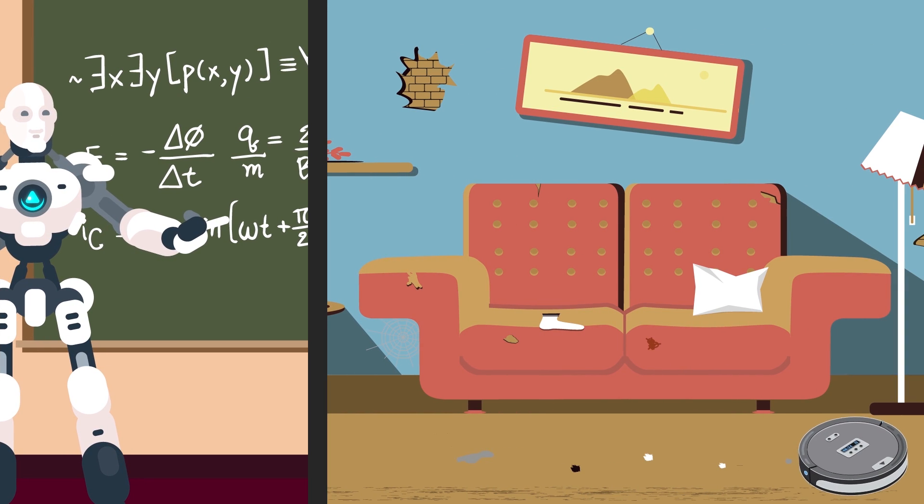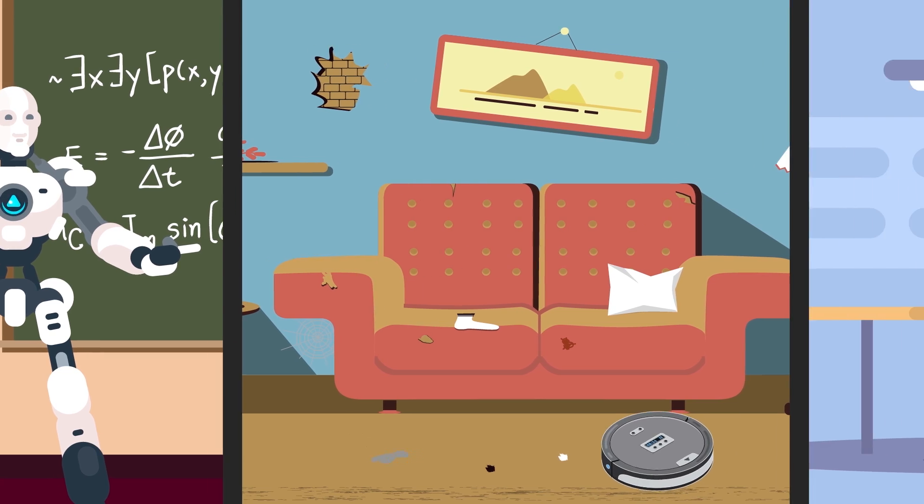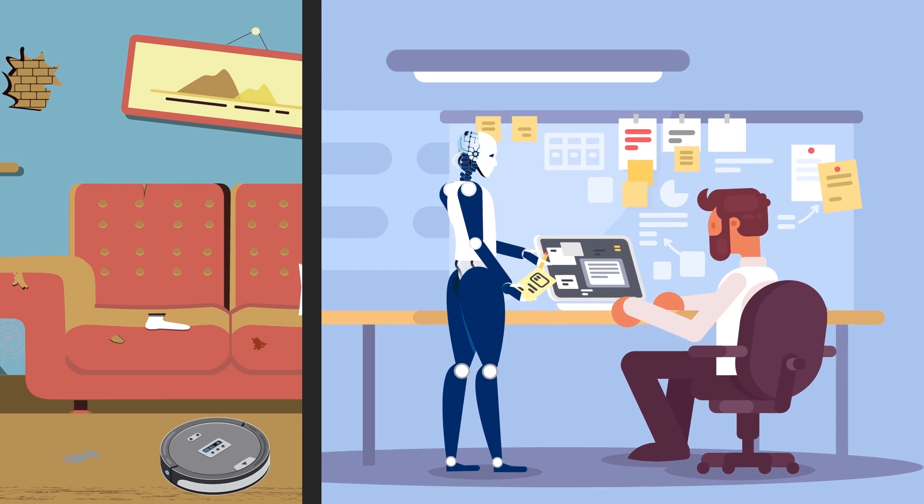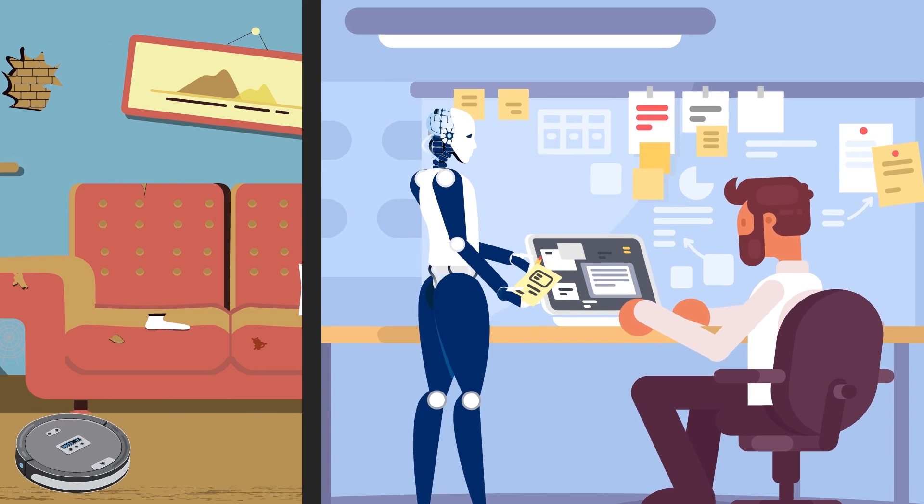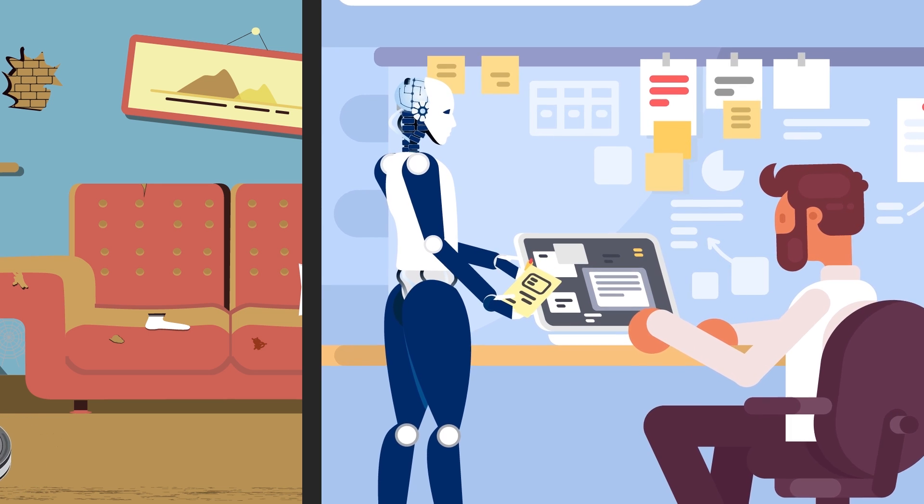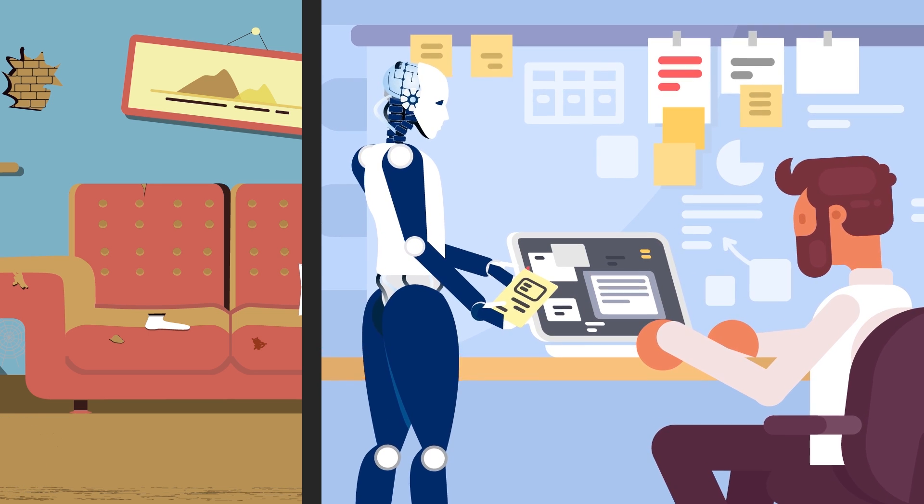But programming a machine for a small number of tasks is relatively easy. So in 50 years, we will have hyper-intelligent AIs to assist us in every facet of our lives, but need not live in fear of them wishing to overthrow us.